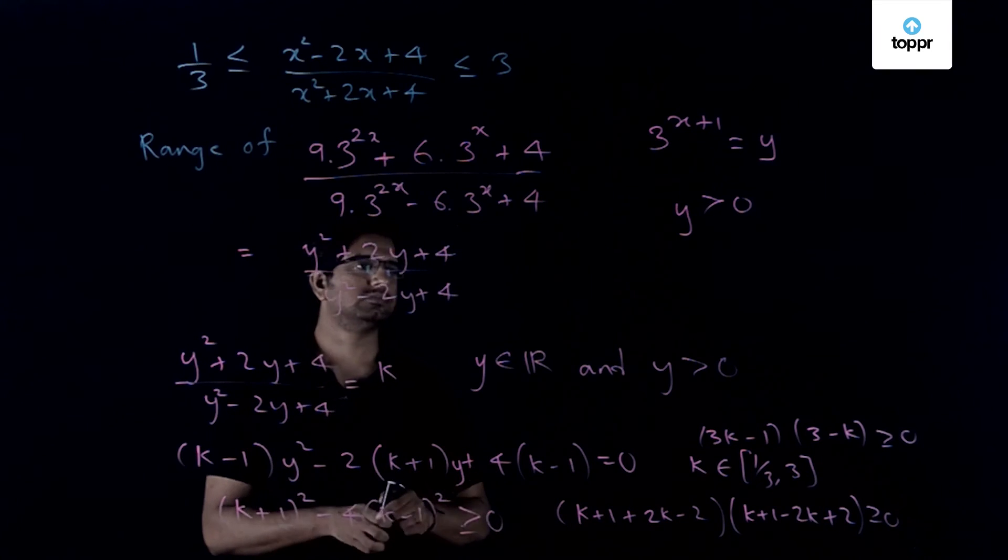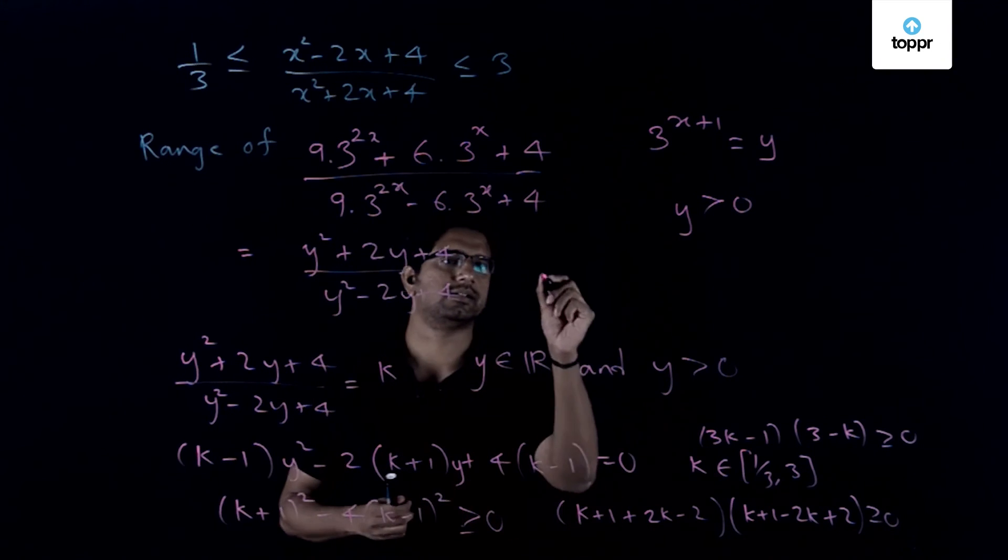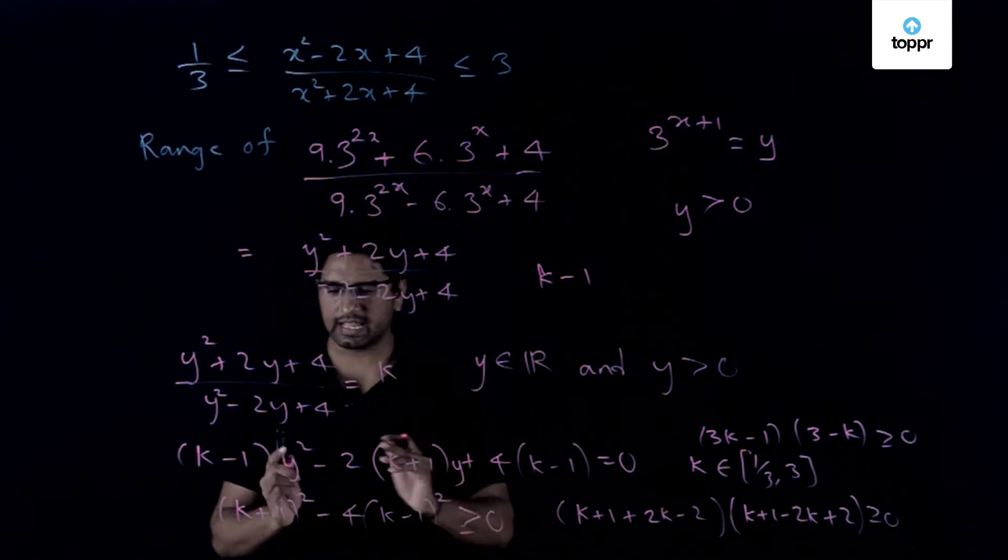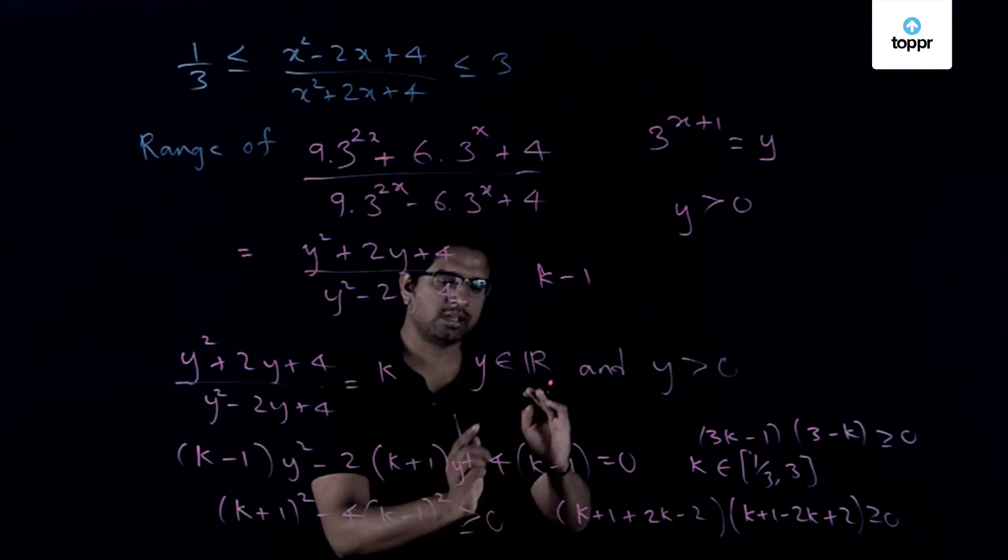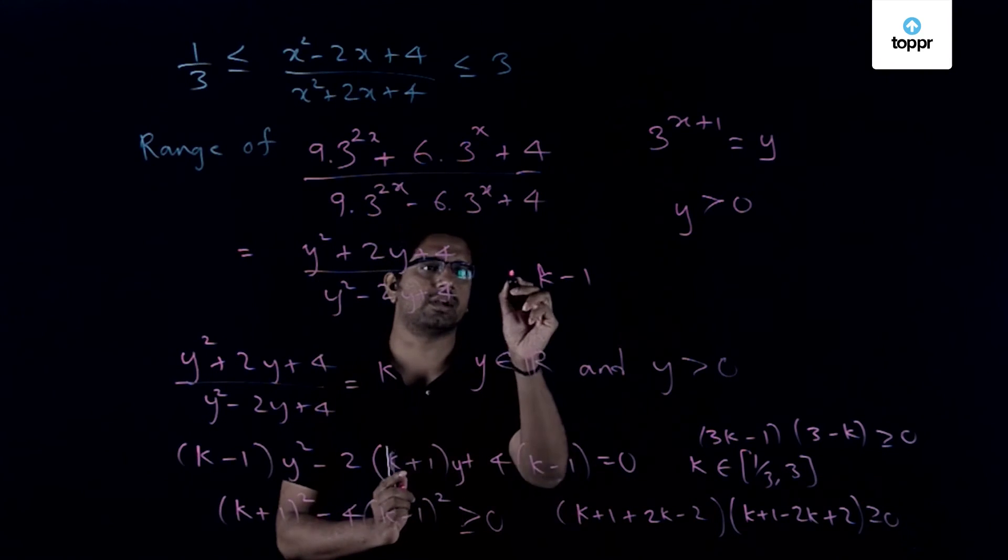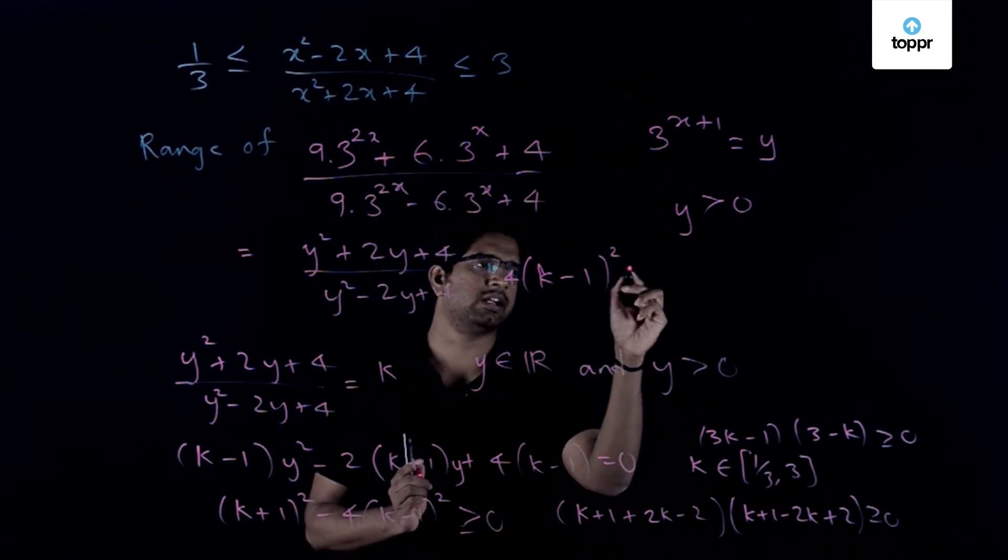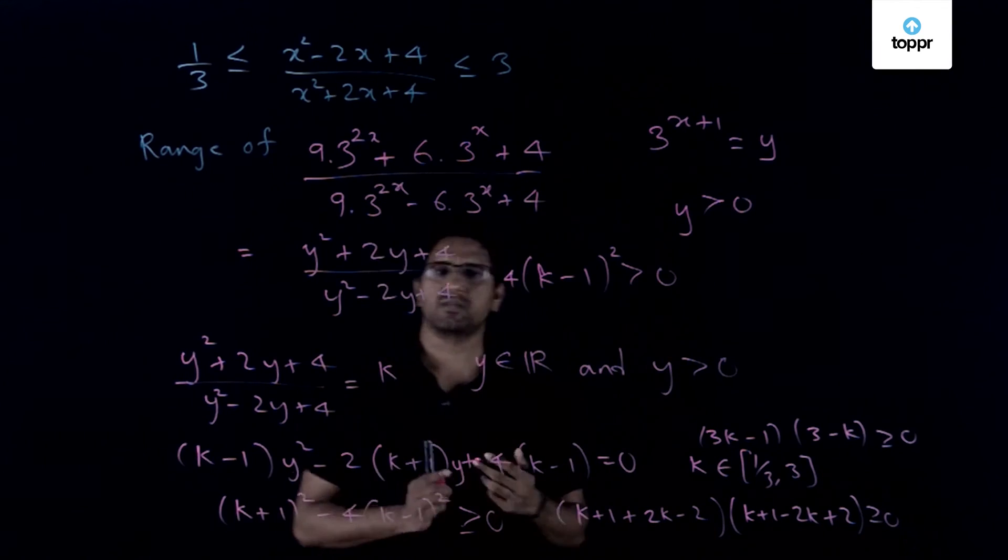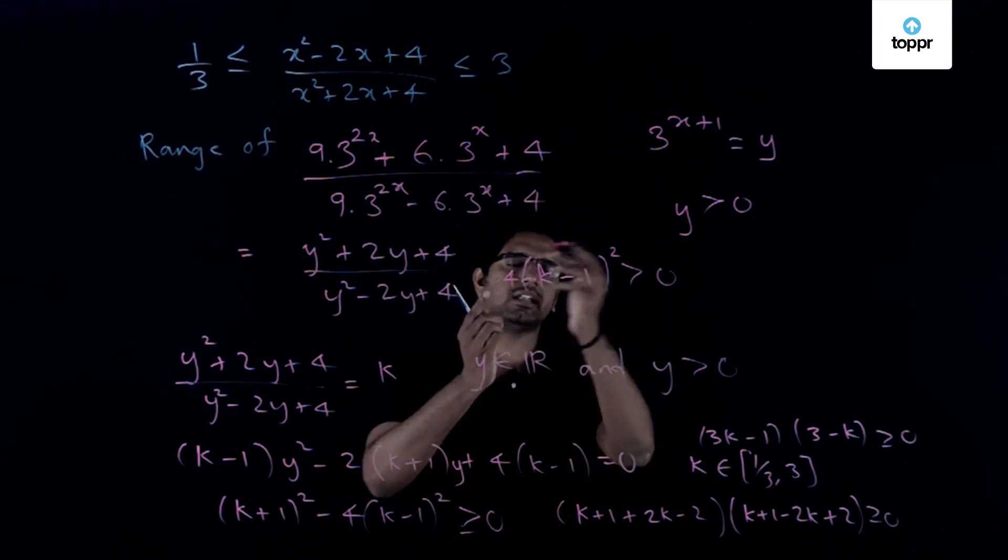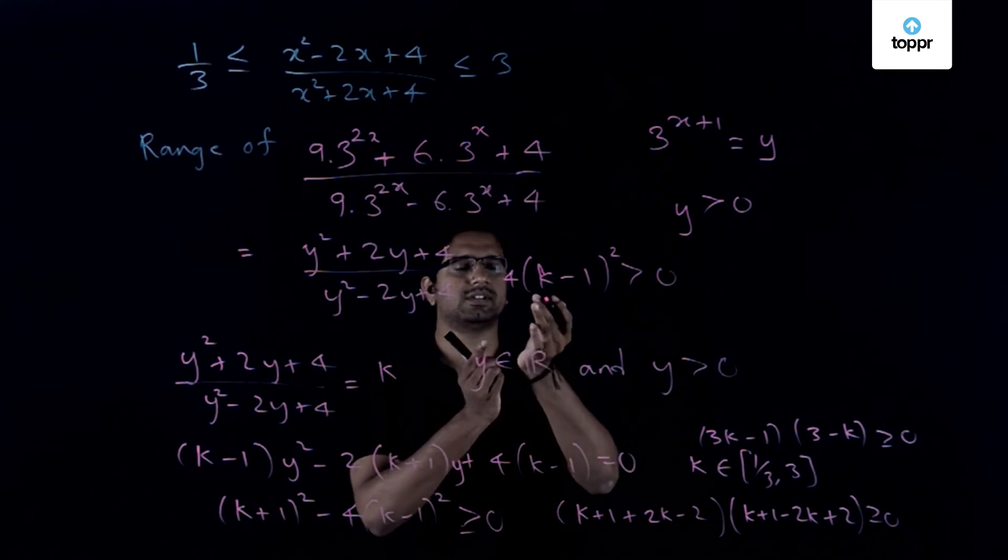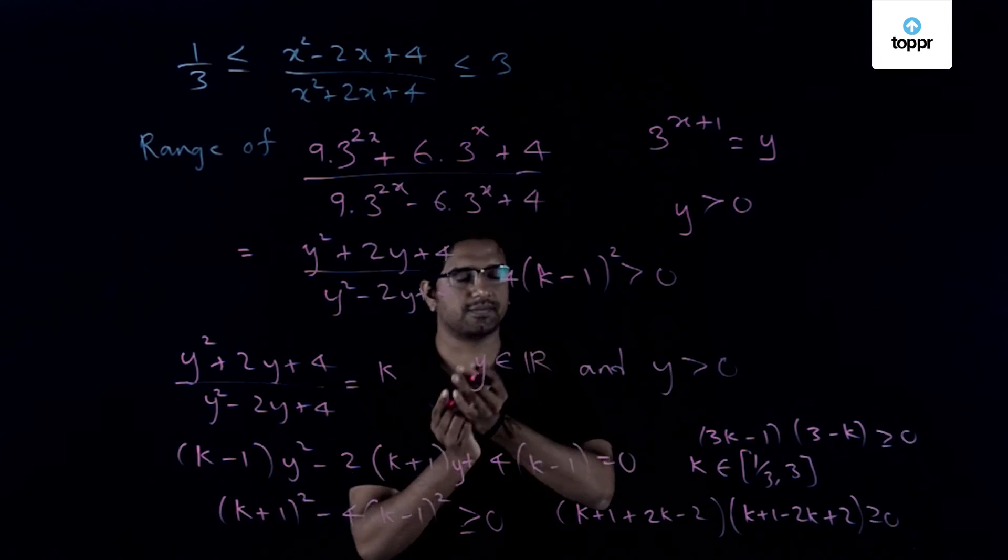That is (k - 1) times f(0) should be positive. So that is the first condition that (k - 1) times f(0), f(0) happens to be 4 times (k - 1). So ultimately we will get as 4 times (k - 1)² should be positive which is true unless the value of k is equal to 1.